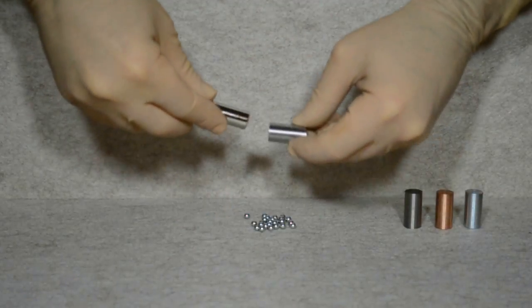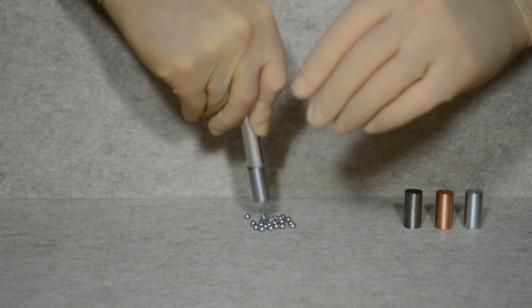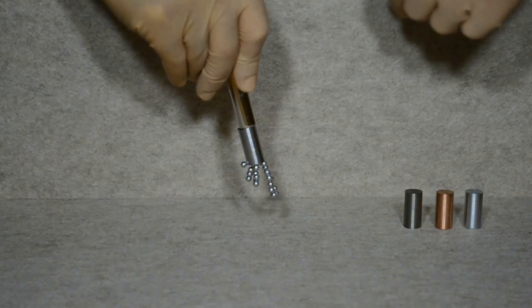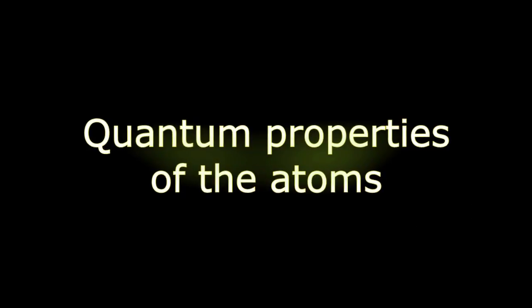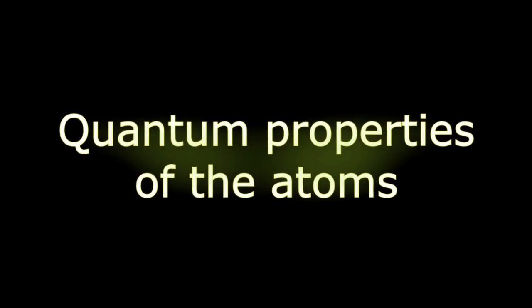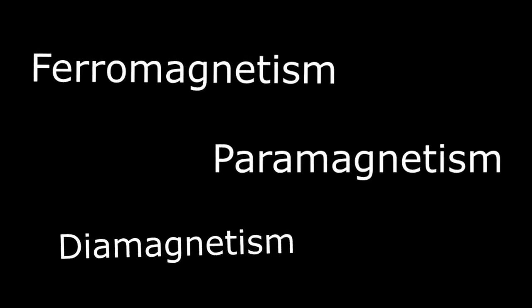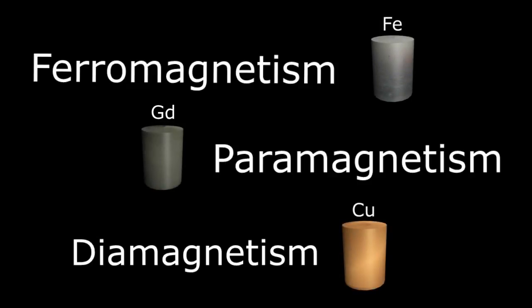What you may not know is that this magnetic phenomenon is actually the real-world manifestation of the quantum properties of the atoms that make up the steel bar, and there are at least three different types of magnetism including ferromagnetism, paramagnetism, and diamagnetism, represented by these four metallic cylinders: iron, gadolinium, copper, and zinc.